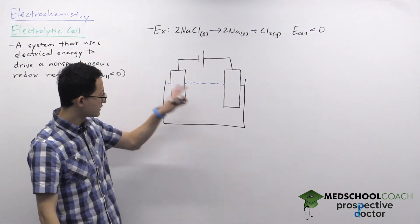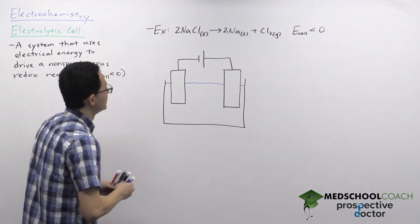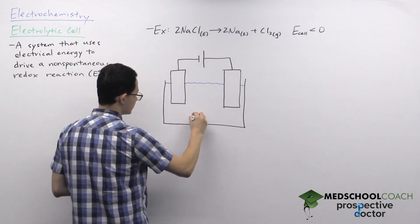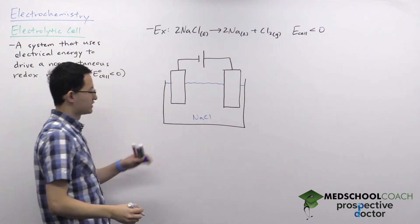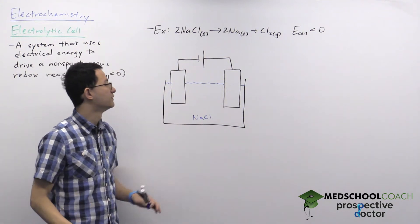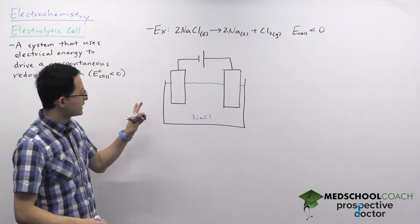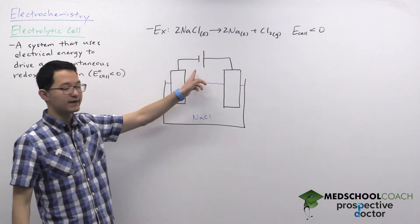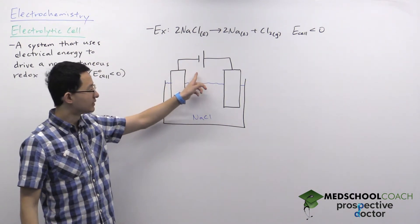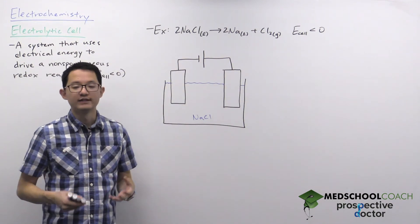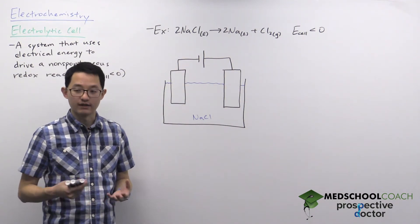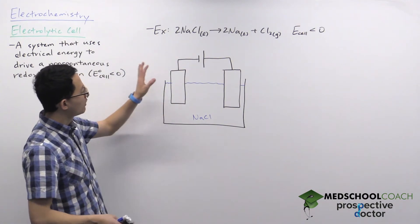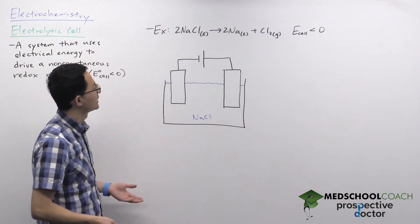Here we have our setup of our electrolytic cell, and the solution is all liquid sodium chloride. If we take a look at the setup, we can tell that there's a major difference from galvanic cells, which is the presence of a battery. The battery is important because it's going to dictate the direction of the flow of electrons. The next thing we want to note is what half reactions are taking place.